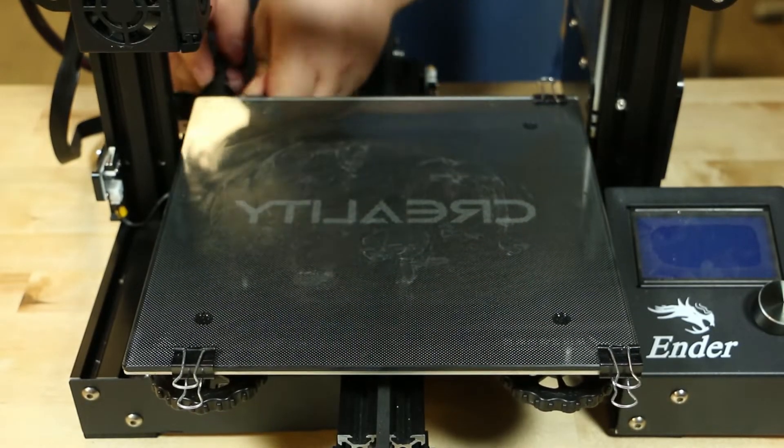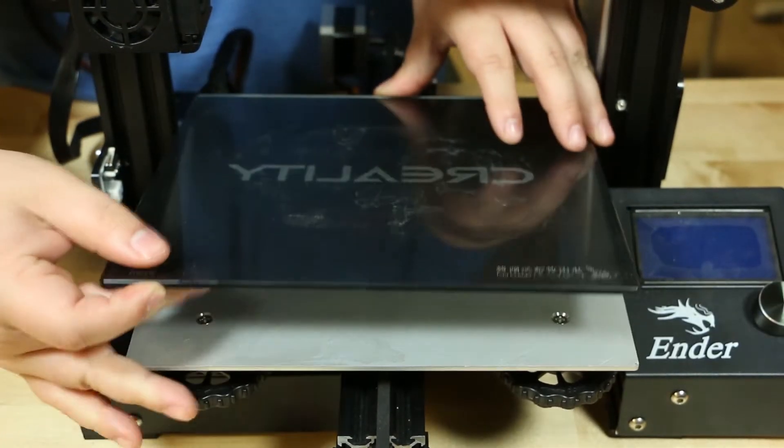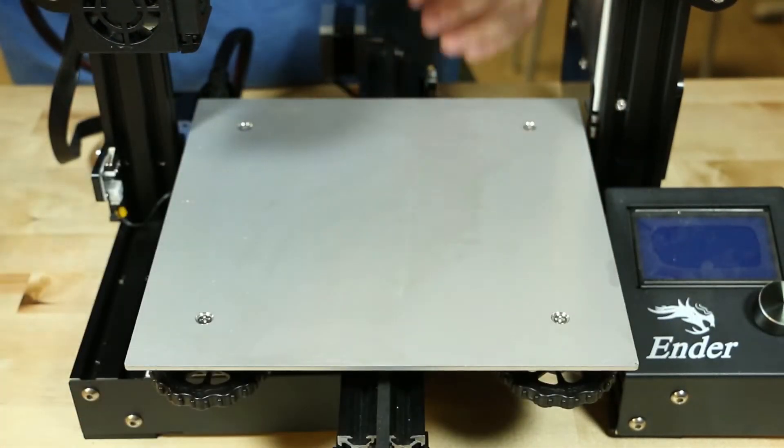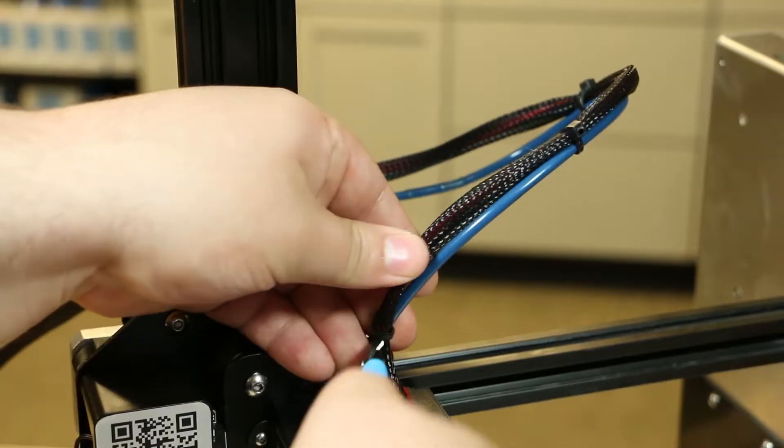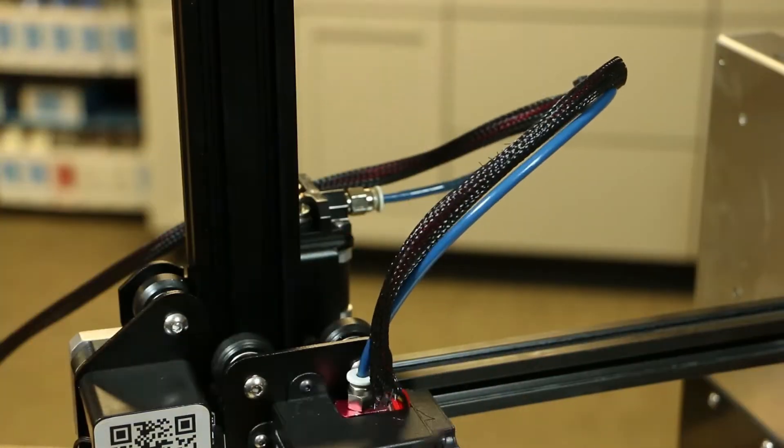Next, remove your glass build plate from your 3D printer if you have one installed. There is a possibility that the extruder or the hot end could drop onto it and cause it to break. Next, separate your wires from each other by cutting off the zip ties that bind them together.